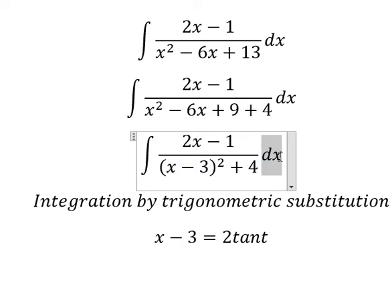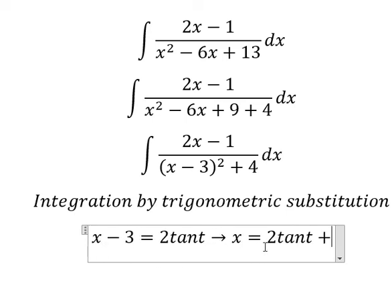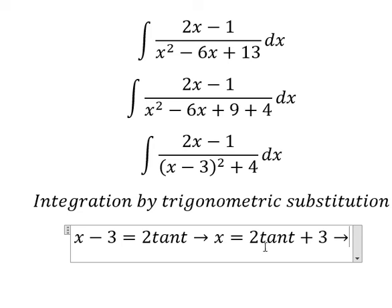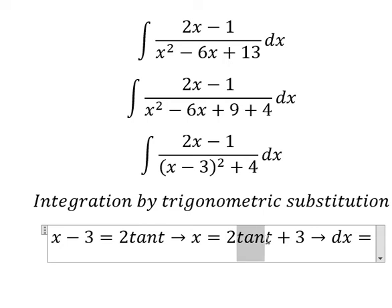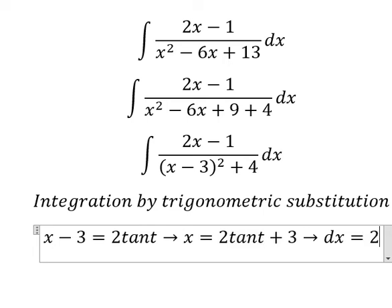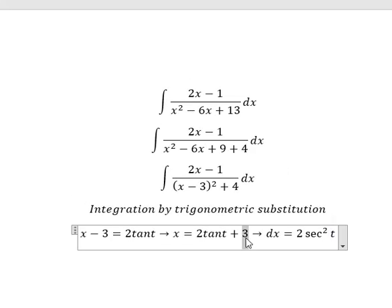And later we simplify the x because we have x. So I will put negative three go to the right and we have two times tan(t) plus three. Later we do first derivative for both sides. First derivative of tan(t) we have sec²(t). First derivative of number three, this is constant, so you got zero.